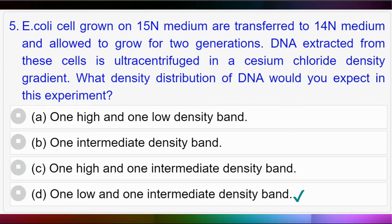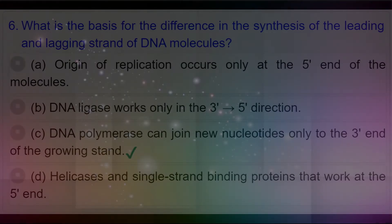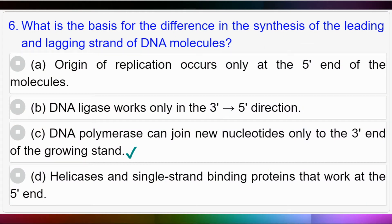Question number five: E. coli cells grown on 15N medium are transferred to 14N medium and allowed to grow for two generations. DNA extracted from these cells is ultra-centrifuged in a cesium chloride density gradient. What density distribution of DNA would you expect? Option A: one high and one low density band; option B: one intermediate density band; option C: one high and one intermediate density band; option D: one low and one intermediate density band.